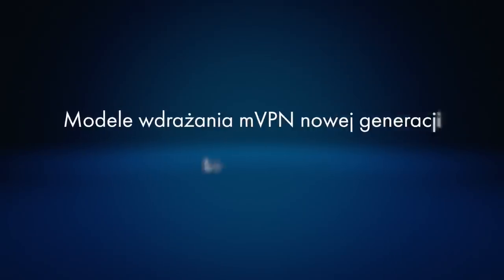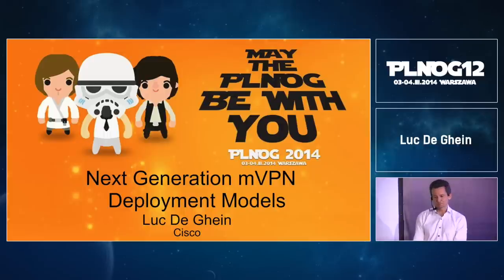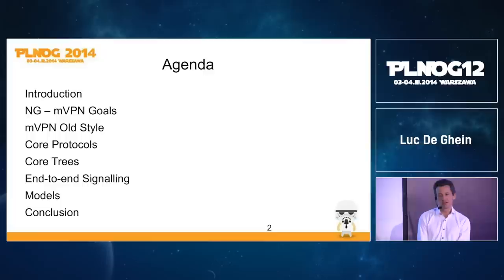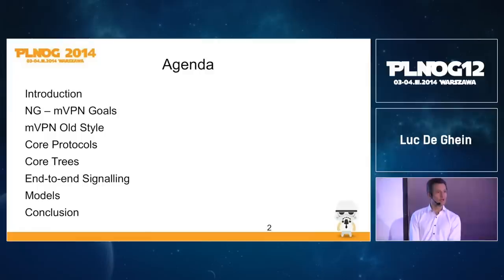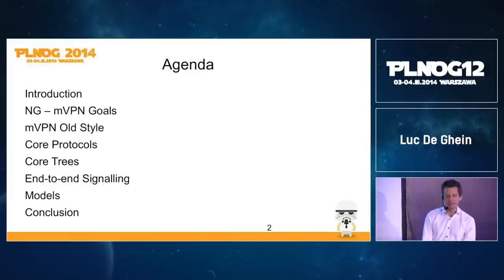This session is on next generation MVPN deployment models. I'm Luke Degain, I work for Cisco as a technical leader in the services department. The agenda covers: a quick overview of what multicast over VPN is about, an introduction to next generation MVPN goals, a look at the old style of doing MVPN, and then the building blocks of the next generation models — core protocols, core trees, overlay signaling, and so on.